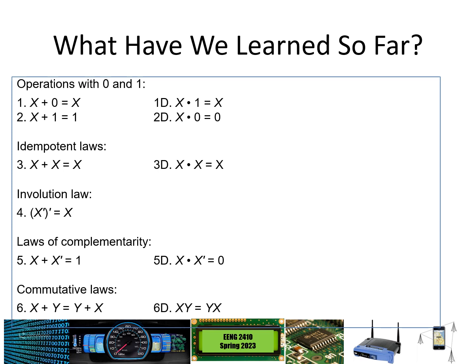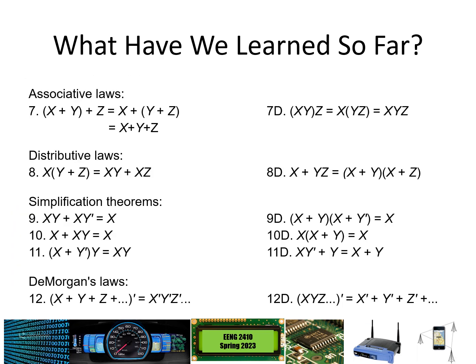With the exception of the involution law, in which case the dual would be exactly what you started with. We also have the associative law, distributive laws, and the various other simplification laws which were previously introduced, along with De Morgan's laws.